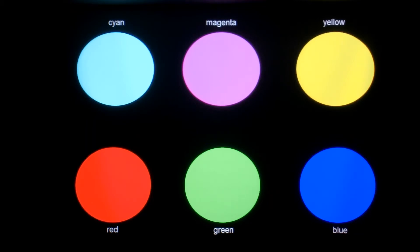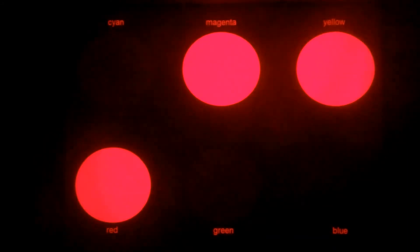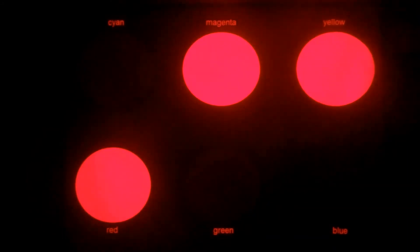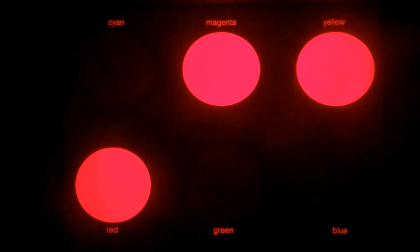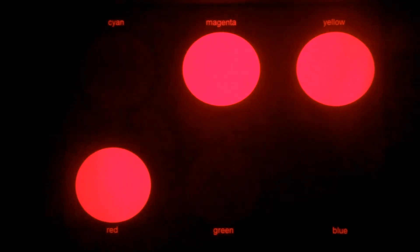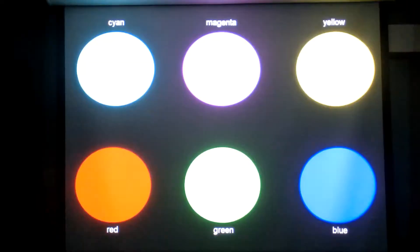We first put the red filter in front of the camera. Red blocks out all colors except red. So the red, the magenta, and the yellow appear red, but the cyan, the green, and the blue appear black.